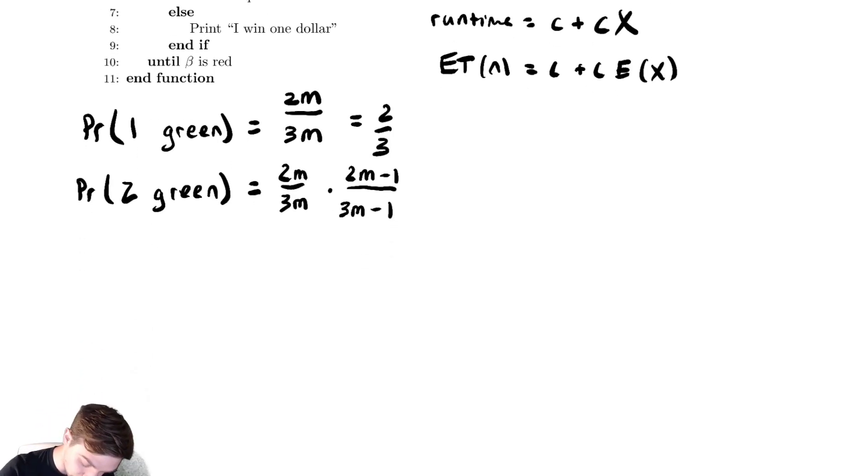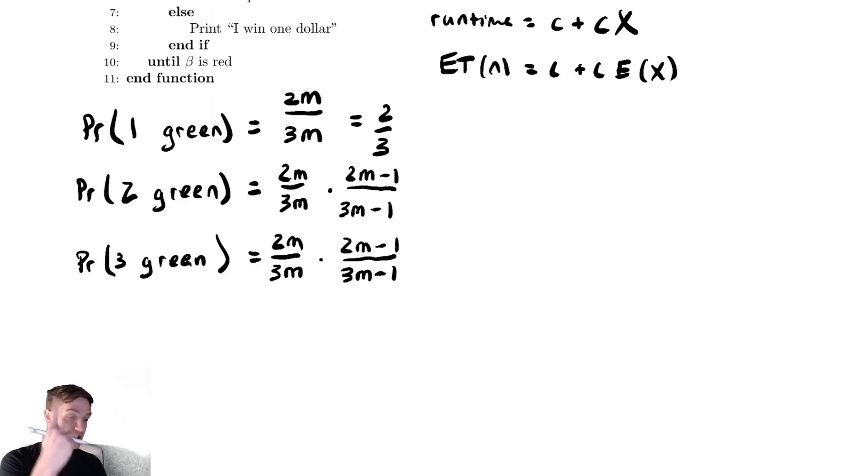So the probability of three green is 2m over 3m times 2m minus 1 over 3m minus 1. So in order to get three, we had to first get two, and then get another one. So the next one we get is 2m minus 2 and 3m minus 2, because again, we have removed one green ball, which removes both from the top and the bottom.